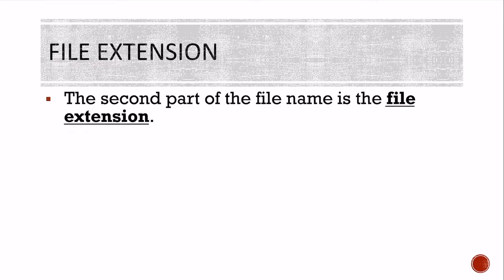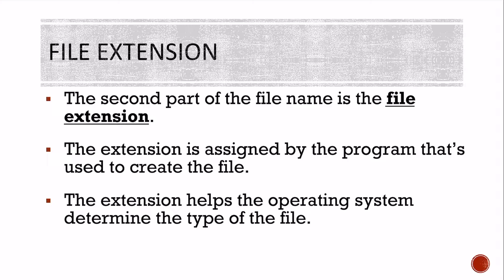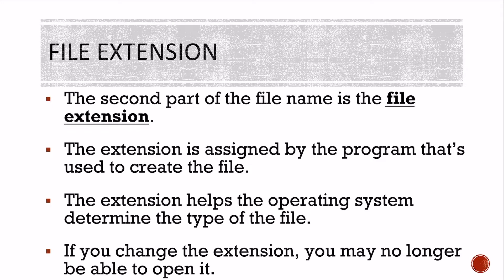File extensions: the second part of the name is the file extension. The extension is assigned by the program that's used to create the file. It also helps the operating system determine the type of file so that it can be opened using the correct application software. If you change the extension, you may no longer be able to open it — sometimes you can, but the majority of the time you cannot.